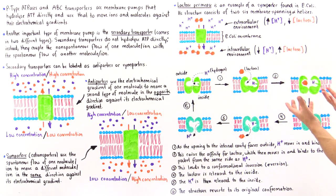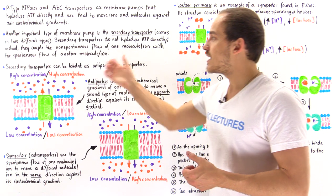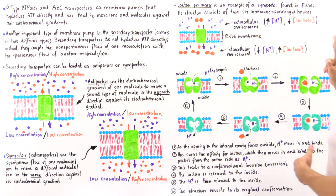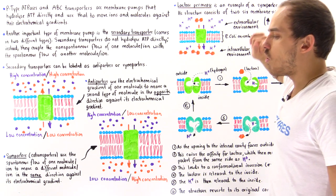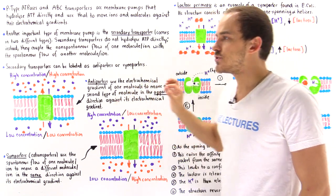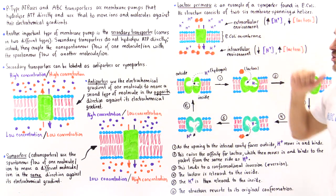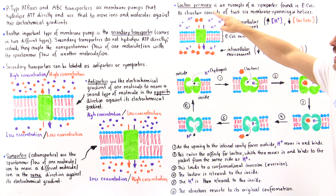To demonstrate, we'll look at a secondary transporter found in prokaryotic E. coli cells. This is called lactose permease — an example of a symporter, or co-transporter, found in E. coli cell membranes.